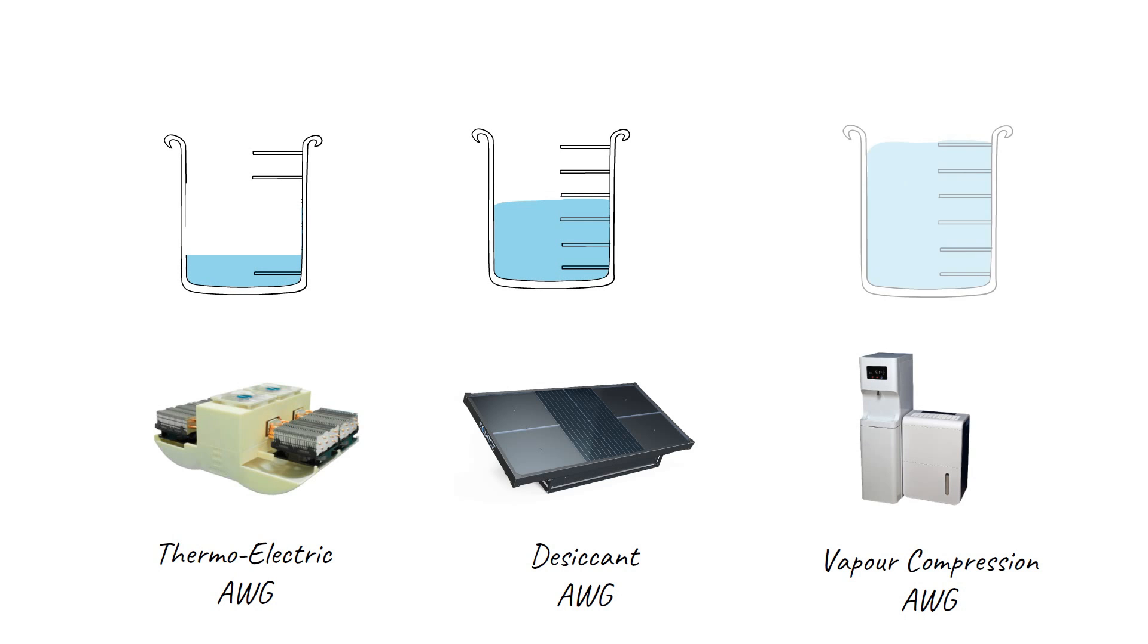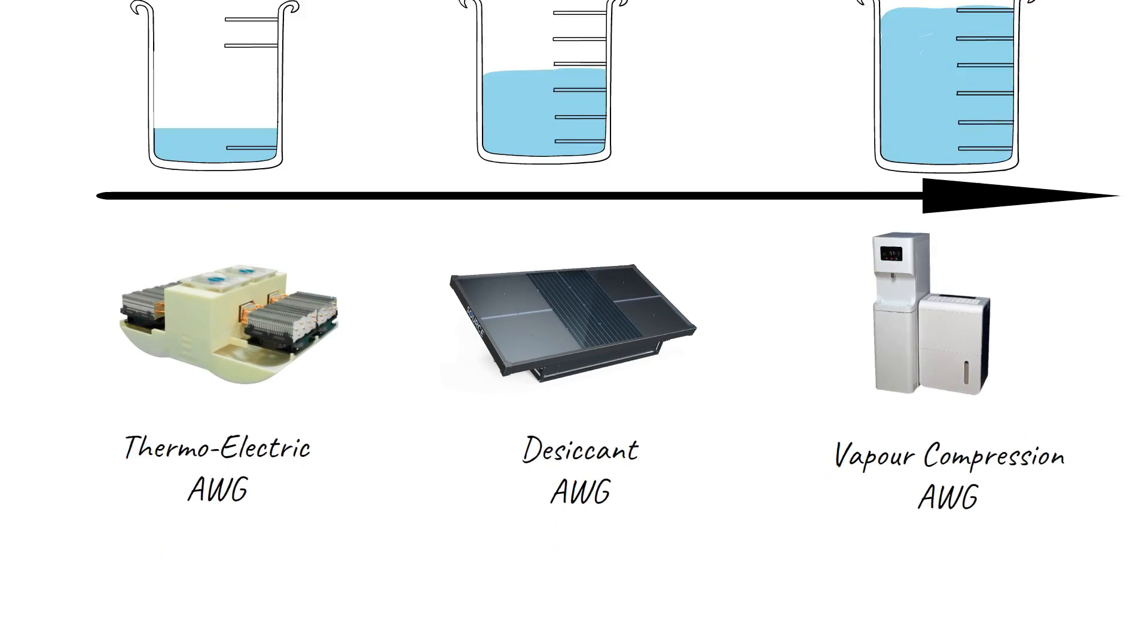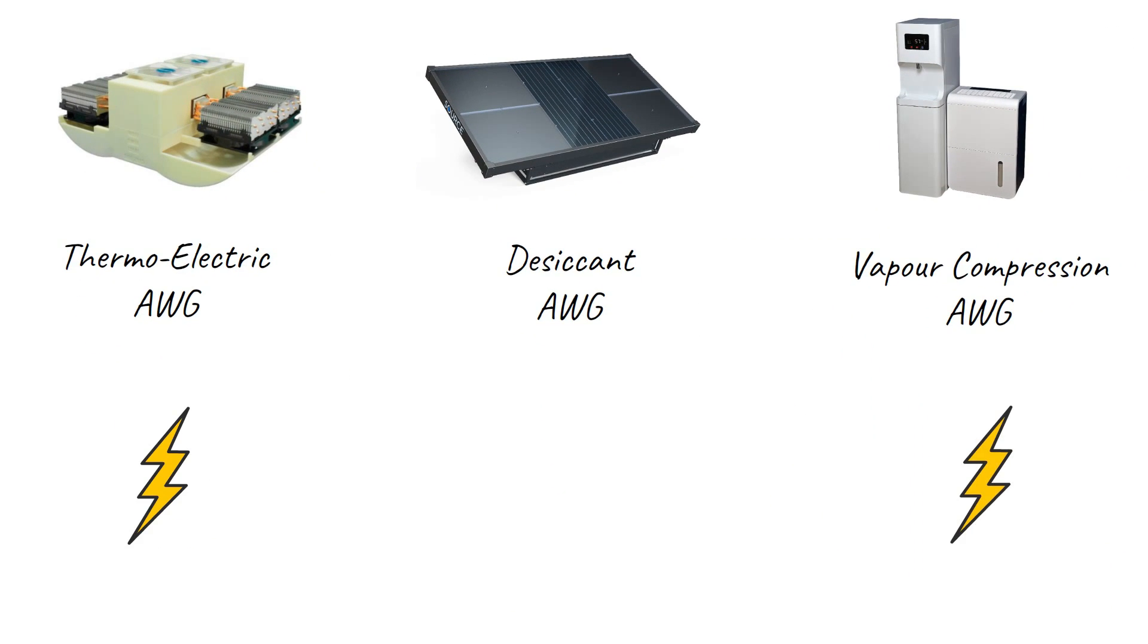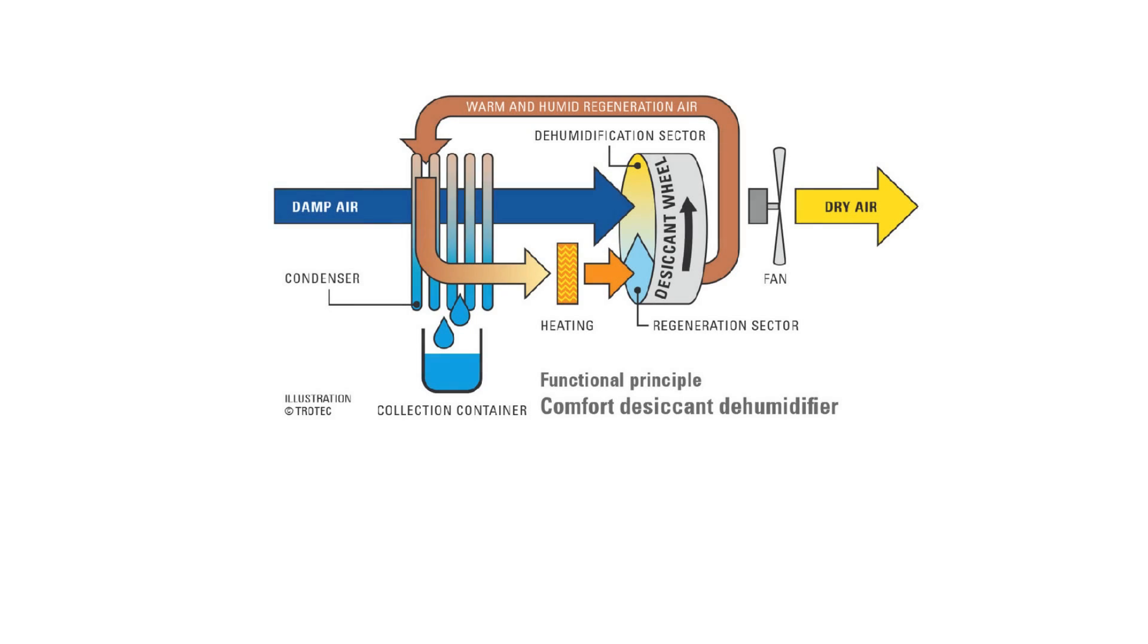The other two technologies depend purely upon electricity. But as mentioned earlier, in desiccant AWG, since mostly heat is required, it can be coupled with solar energy. Let's have a look at the schematic diagram of desiccant technology.